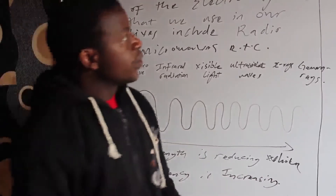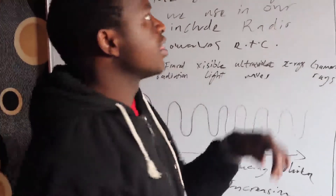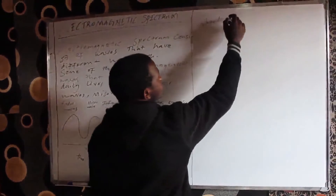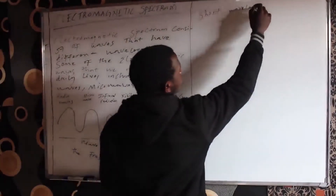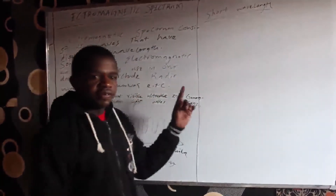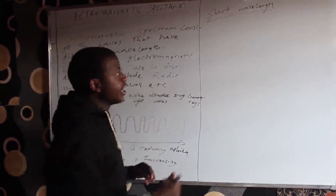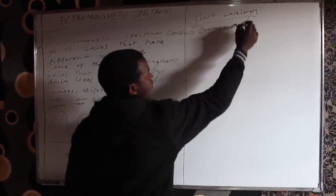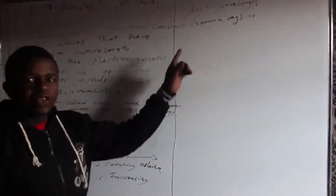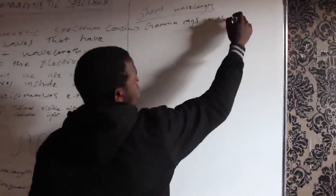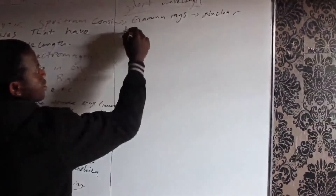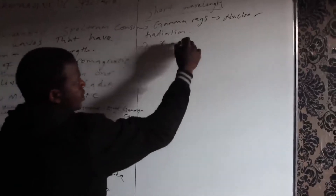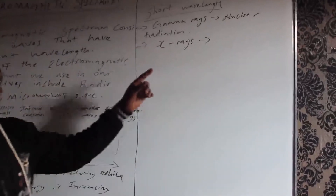Let us now look at the length of the wavelength. Electromagnetic waves that have a short wavelength include the gamma rays — the source of gamma rays is nuclear radiation — and the X-rays, whose source is explosions.